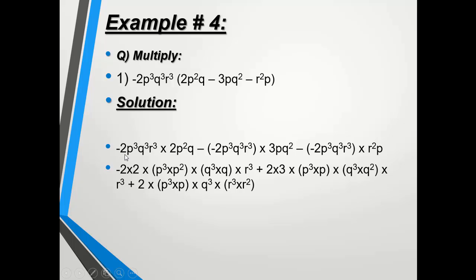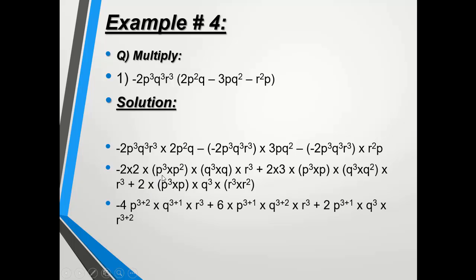The constants are grouped together; p³ is grouped with p², q³ with q, and r³ is written as-is since it has no matching family. Two times two is four, with a minus sign giving minus four. Since the bases are the same and they are multiplying, we add powers: p becomes 3 + 2, q becomes 3 + 1, and r stays as r³.